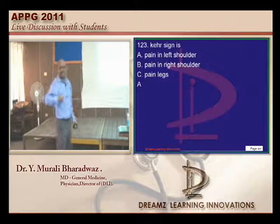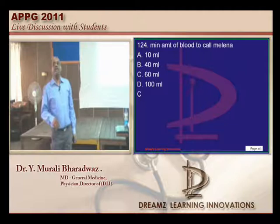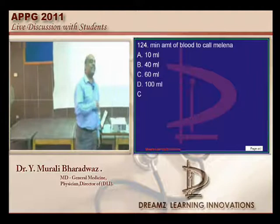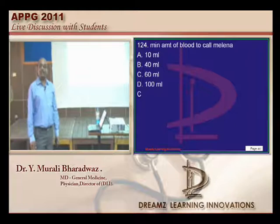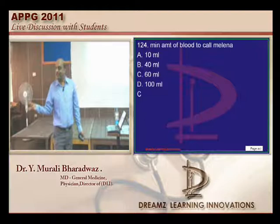Kehr's sign is pain referred to the left shoulder — I think a very easy question. How much blood should be present for melena? Another tricky question. The minimum is 60 ml. So the answer is 60 ml. How many numerical questions were there till now? At least 8 or 9, and all 9 require guessing.